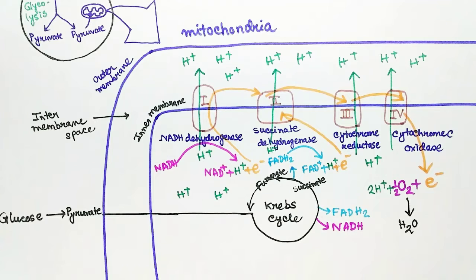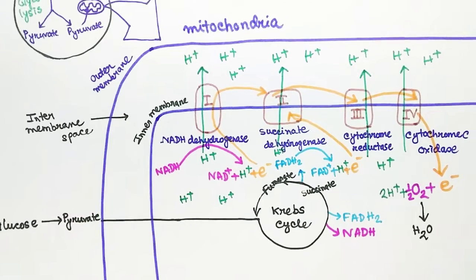Whenever an electron passes through a complex, the complexes push the hydrogen ions to the inter-membrane space. As a result, the concentration of H+ ions increases in the inter-membrane space, which causes a gradient. The concentrated hydrogen ions then want to move to the less concentrated space, which is the matrix of mitochondria.